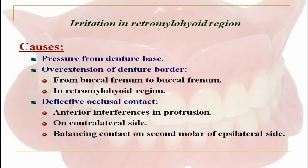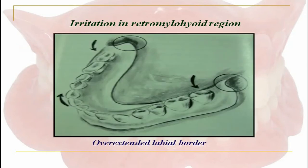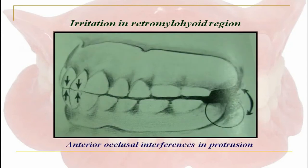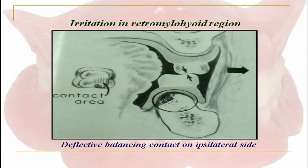Irritation in the retromylohyoid region: causes could be pressure from the denture base, overextension of the denture border from the buccal frenum to buccal frenum and in the retromylohyoid region, and deflective occlusal contacts causing anterior interferences in protrusion on contralateral sides, and balancing contact on the second molar of its lateral side. The picture shows the overextended labial border, anterior occlusal interferences in protrusion, deflective occlusal contacts on contralateral side, and deflective balancing contact on ipsilateral side.